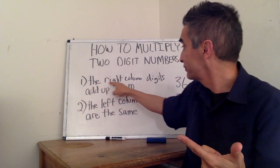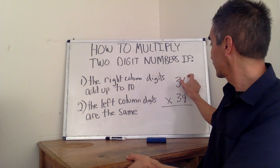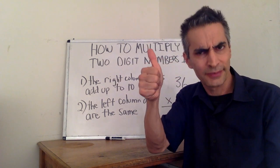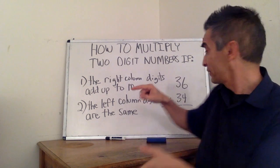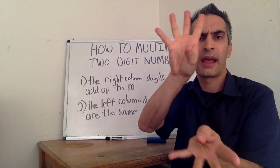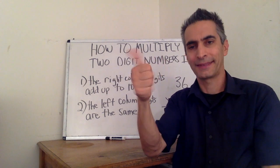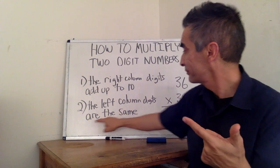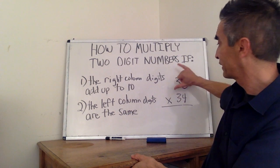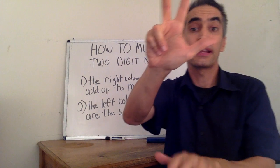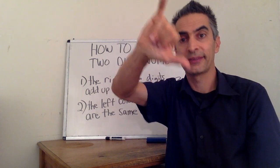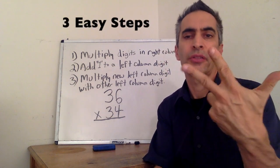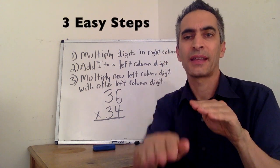If the right column digits add up to 10 — for example, here we have a 6 and a 4, and they add up to 10. And second, if the left-hand column digits are the same. Notice here that the 3 and the 3 are the same. Now how are we going to multiply these numbers together? Three easy steps.